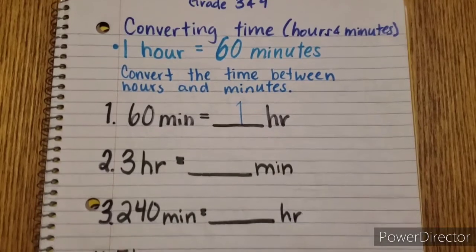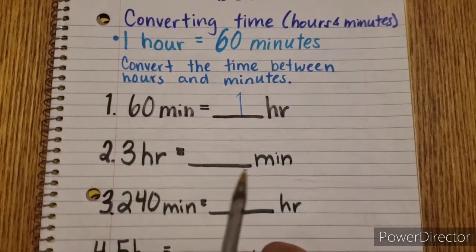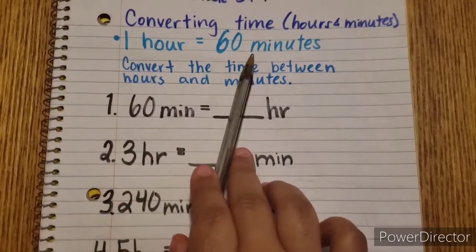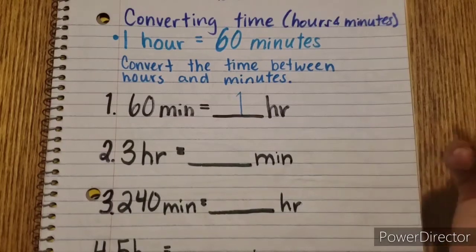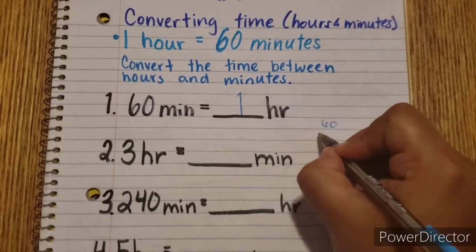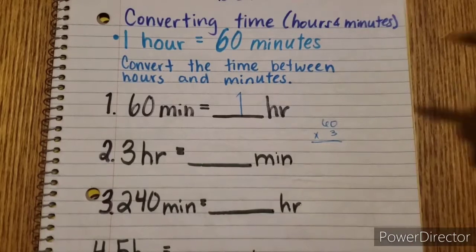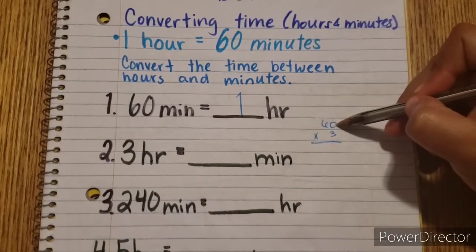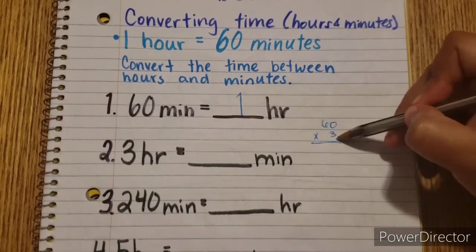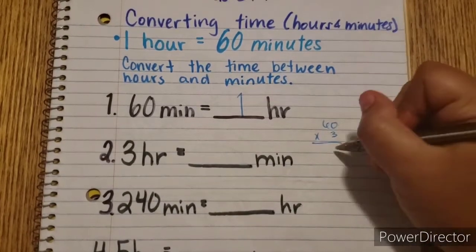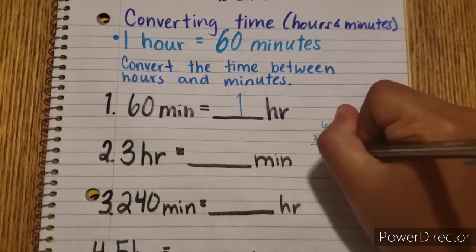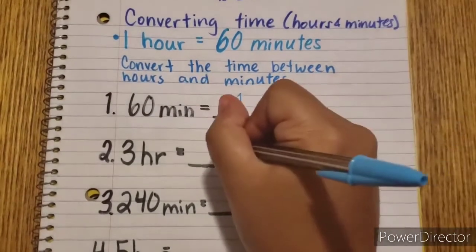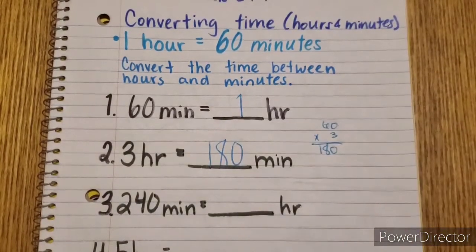Now let's look at number two: three hours equals how many minutes. So if one hour equals 60 minutes, how many would three hours be? What we need to do is 60 times three. Because one hour is 60 minutes, we want to figure out how much is in three hours. Three times zero is zero, six times three is 18, so this would be 180 minutes. Three hours equals 180 minutes.